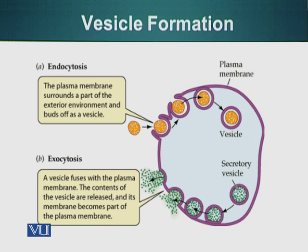There are three types of endocytosis: phagocytosis, pinocytosis, and receptor-mediated endocytosis. Phagocytosis is basically a process in which the cell engulfs a large particle — for example, our white blood cells when they come across a bacteria or a pathogen. Pinocytosis, where 'pino' basically means drinking, involves no large particles; the cell engulfs water and some dissolved solutes through vesicles and imports them inside the cell.